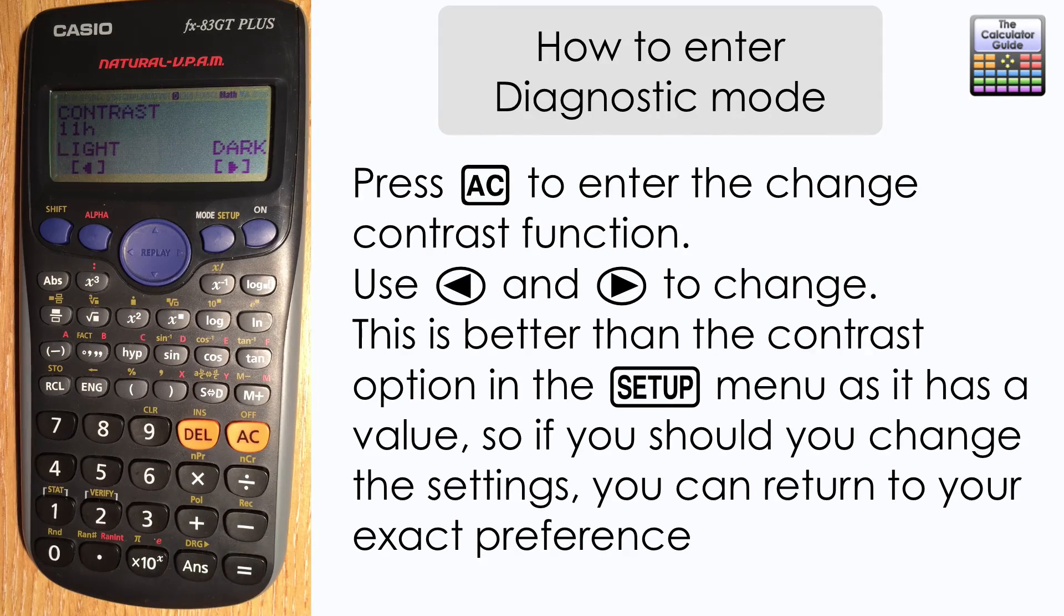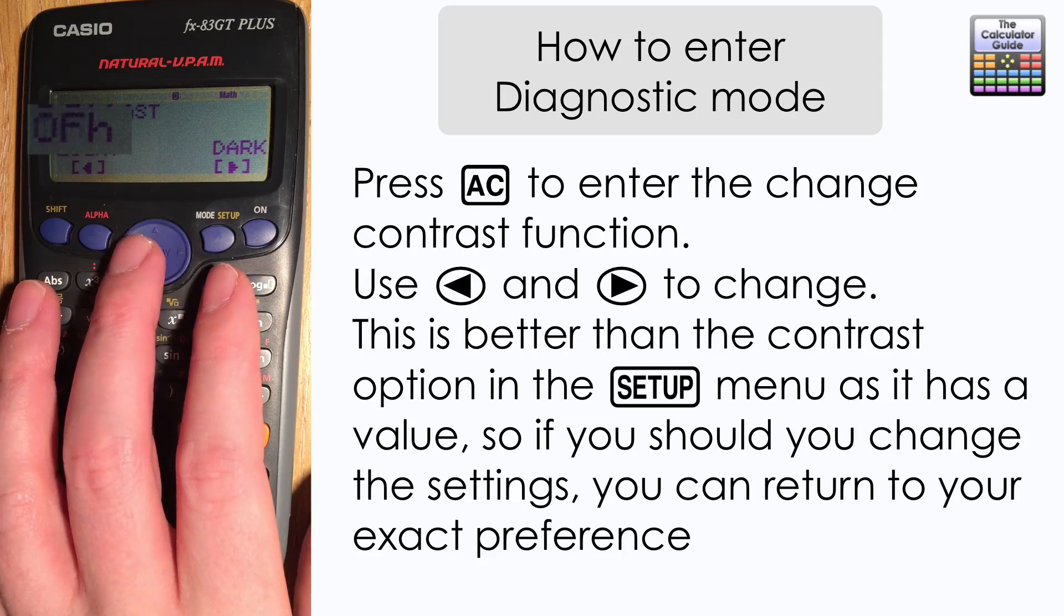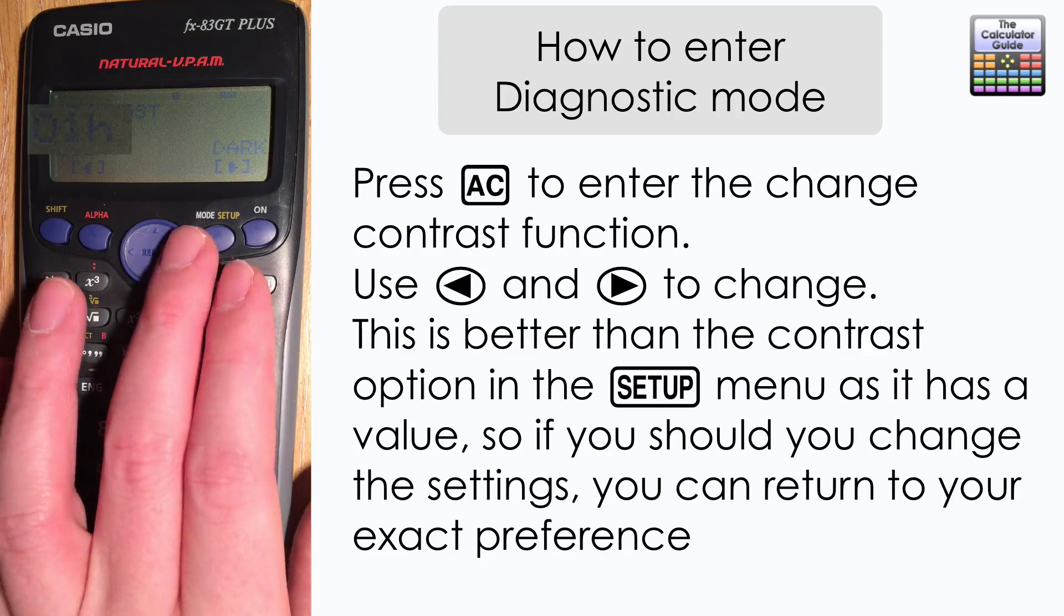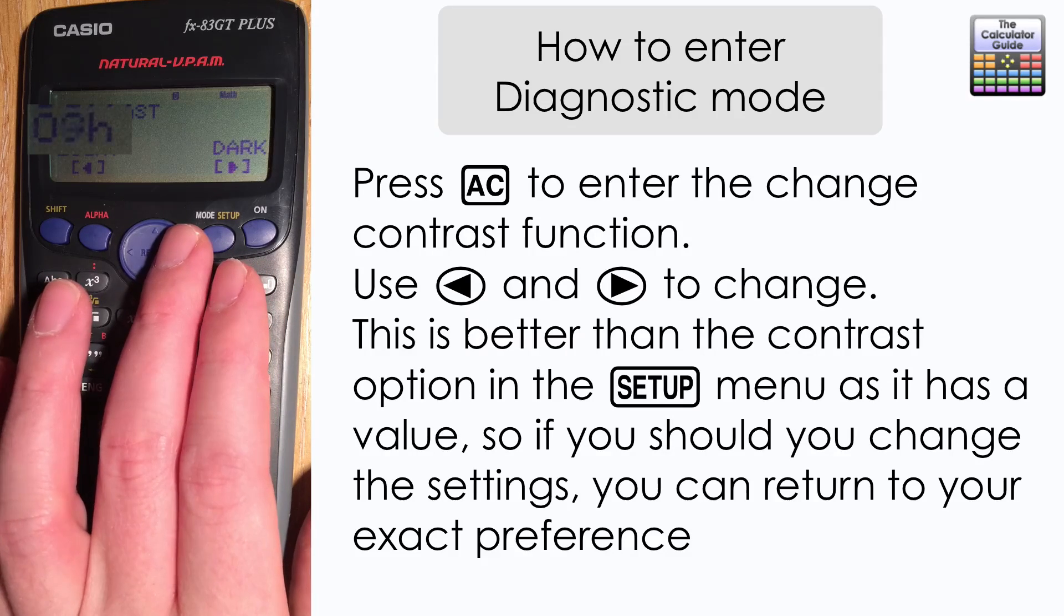Once you've pressed AC, you can enter a function where you can change the contrast. This is very similar to what you have in the setup menu, except there's an extra function here where you have a value to set where your contrast is at.